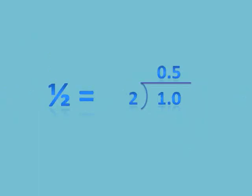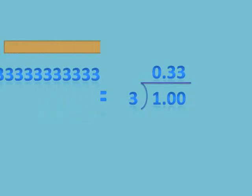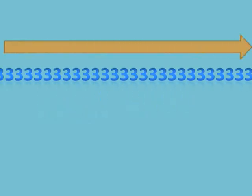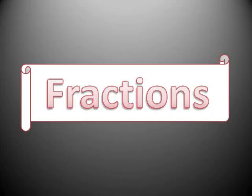One half gives you 0.5, and one quarter is 0.25, one third is 0.333, all the way out as far as you can see.